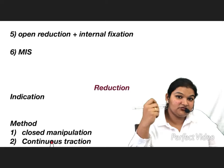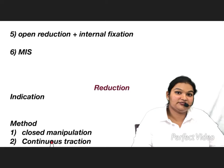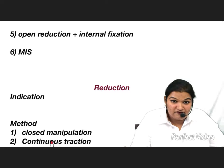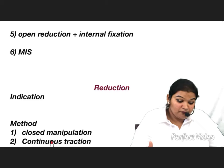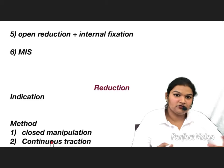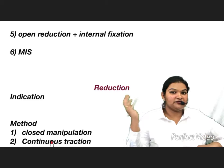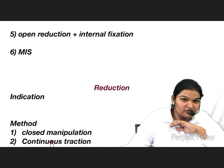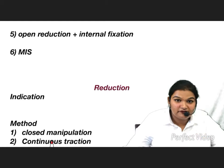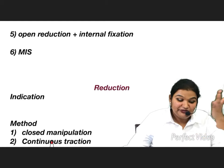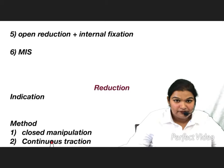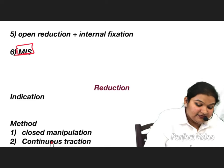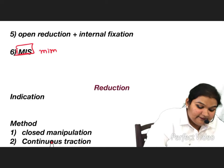Open reduction and internal fixation is done when there is an open fracture, gross deformity, or the bone ends are so badly dislocated that you need to open the fracture site and put wires, pins, rods, and nails to get the bone into place.